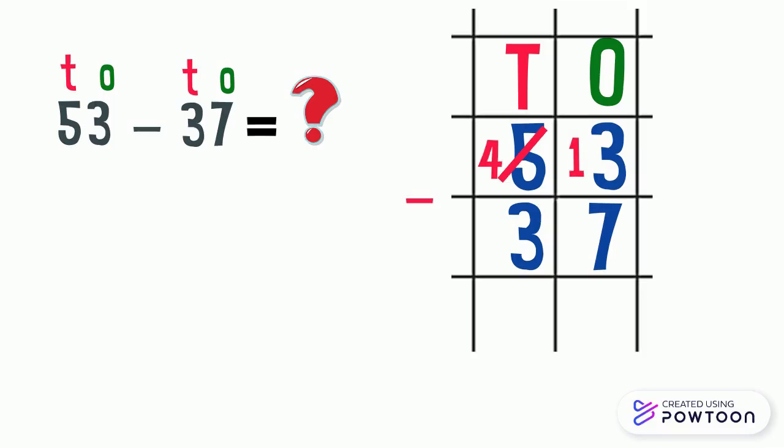Now we are going to calculate thirteen minus seven. After seven: eight, nine, ten, eleven, twelve, thirteen. It is six ones. Four tens minus three tens equals one ten. So 53 minus 37 equals 16.